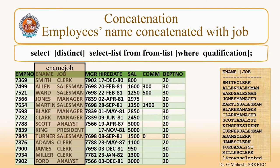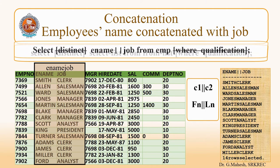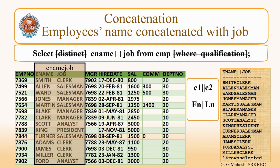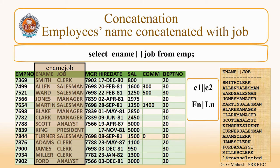This is a concatenation query which concatenates two column values — we want employee names concatenated with job. For concatenating two columns, we use the pipe symbol (||). For example, C1 || C2 concatenates columns C1 and C2, and FIRSTNAME || LASTNAME gives the full name of an employee. The answer for the present query is SELECT ENAME || JOB FROM EMP, which displays all employees' details.